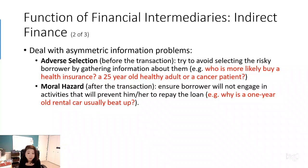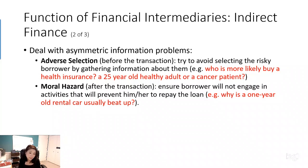How can financial intermediaries mitigate this moral hazard problem? They will ensure borrowers do not engage in activities that would prevent repayment of the loan. For example, when a corporation borrows money from a bank, the bank will periodically check their financial reports and monitor their activities to see how they're using the funds. These are the two risky areas financial intermediaries face, and the key reason is asymmetric information — the borrower or lender has more information than the intermediary. It is the financial intermediary's job to reduce that uncertainty by investigating information and setting stricter rules.